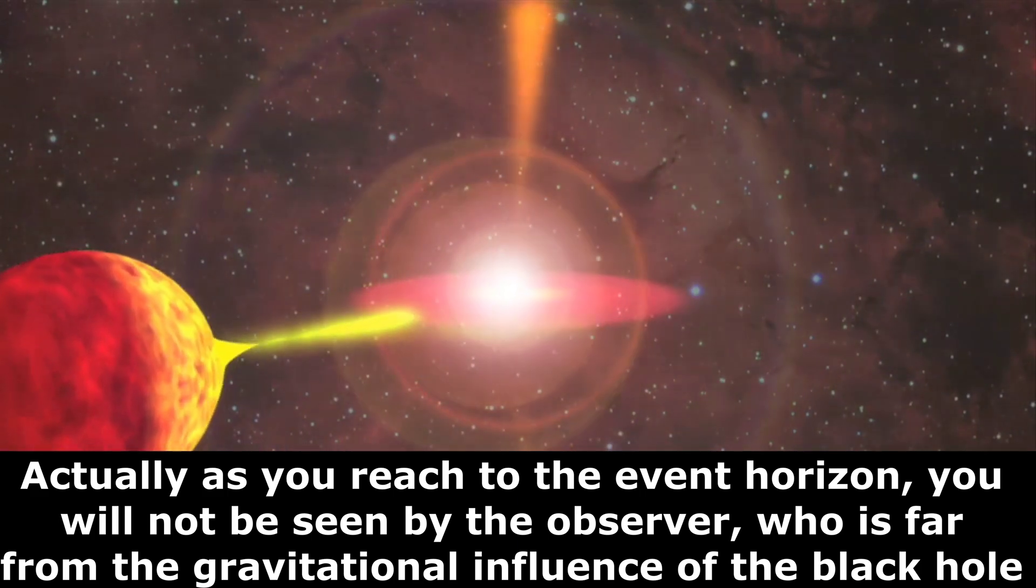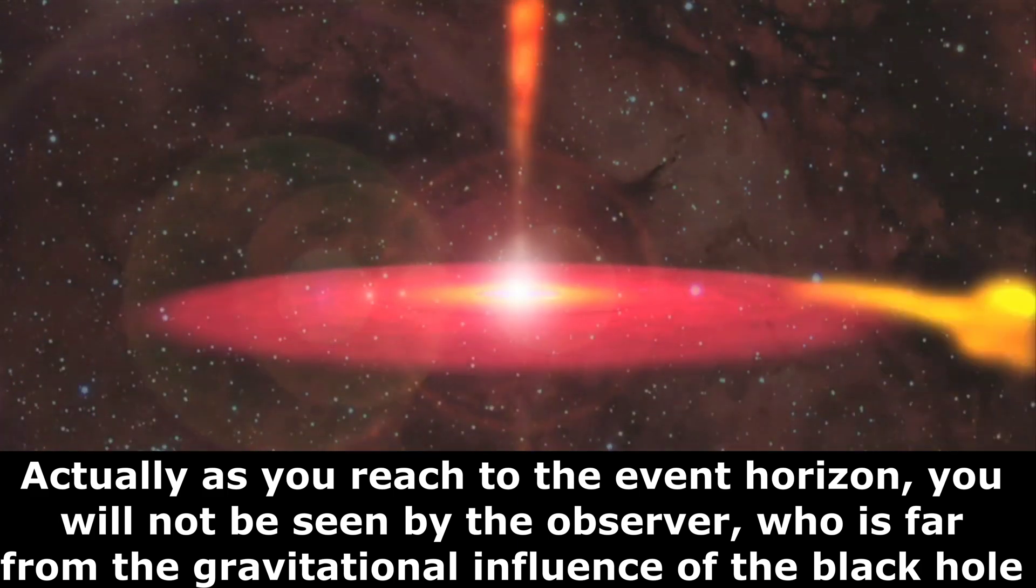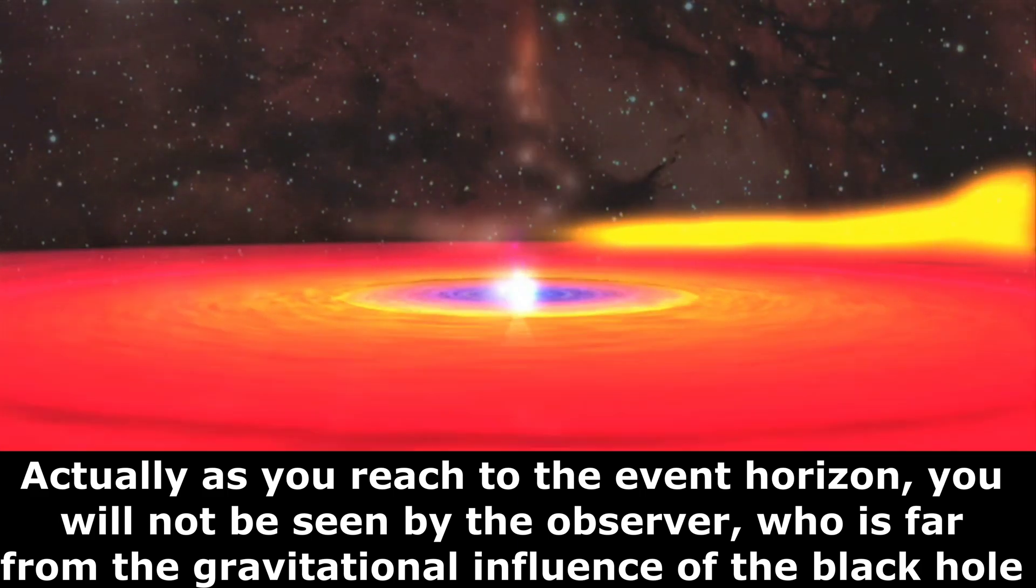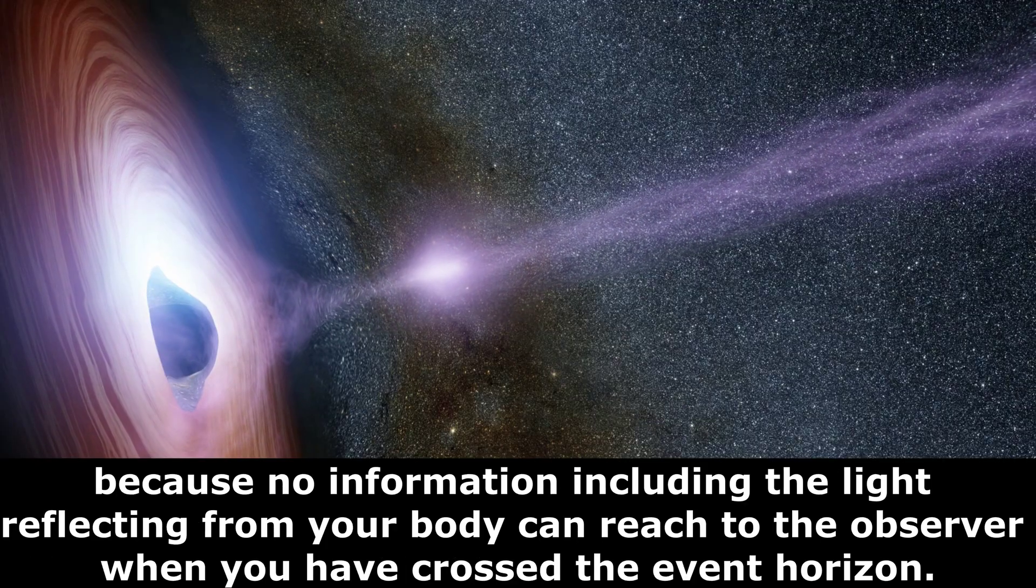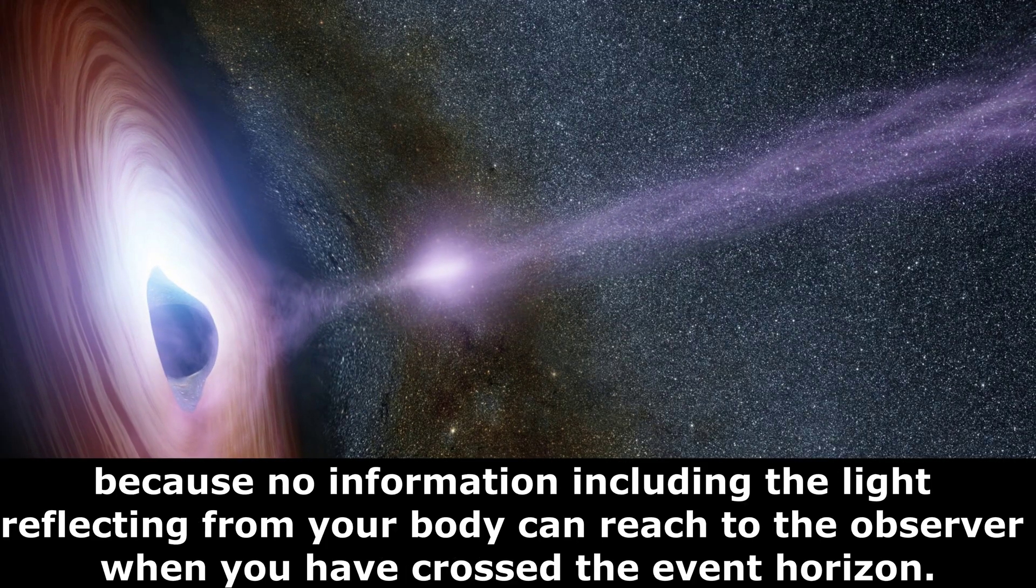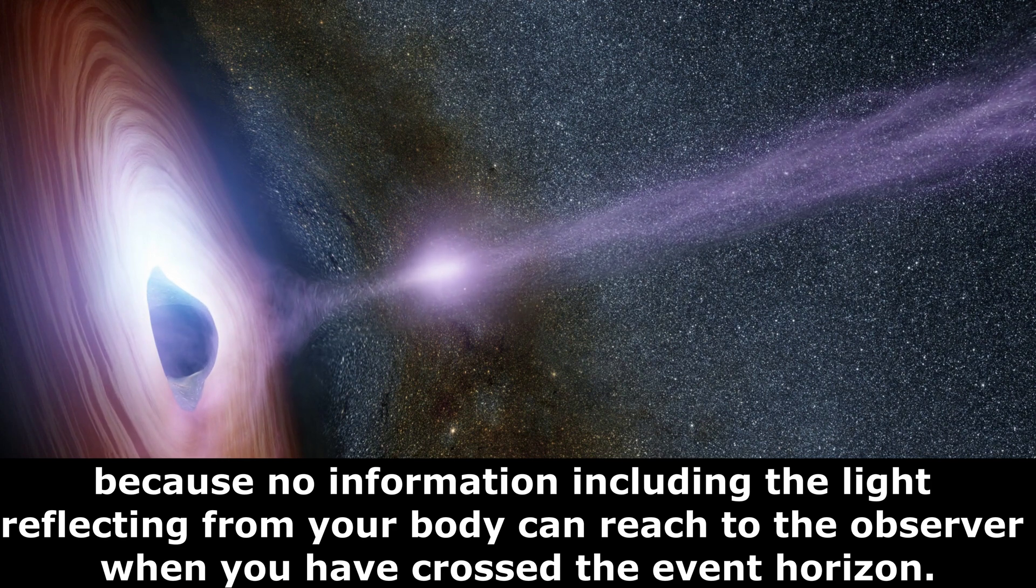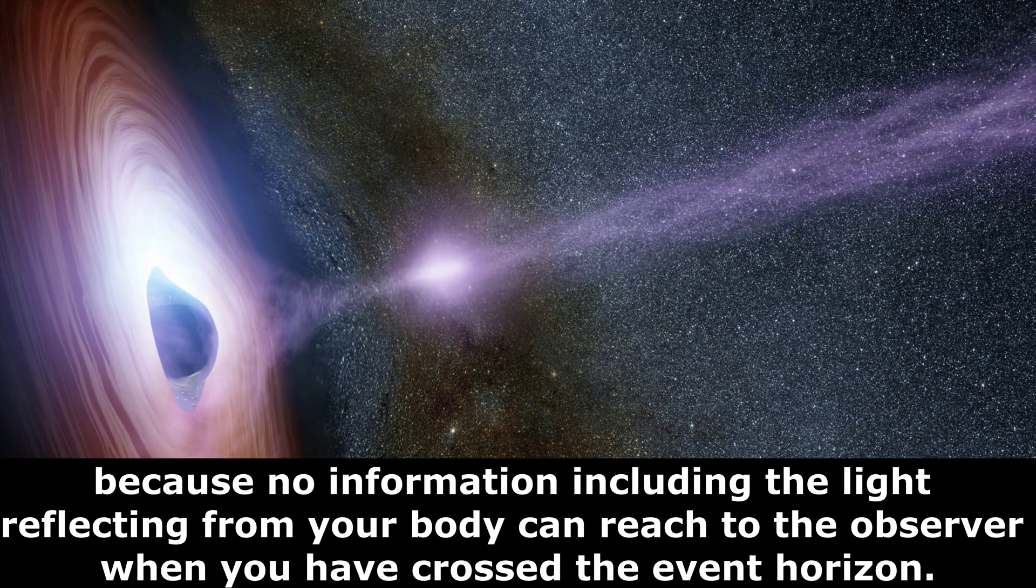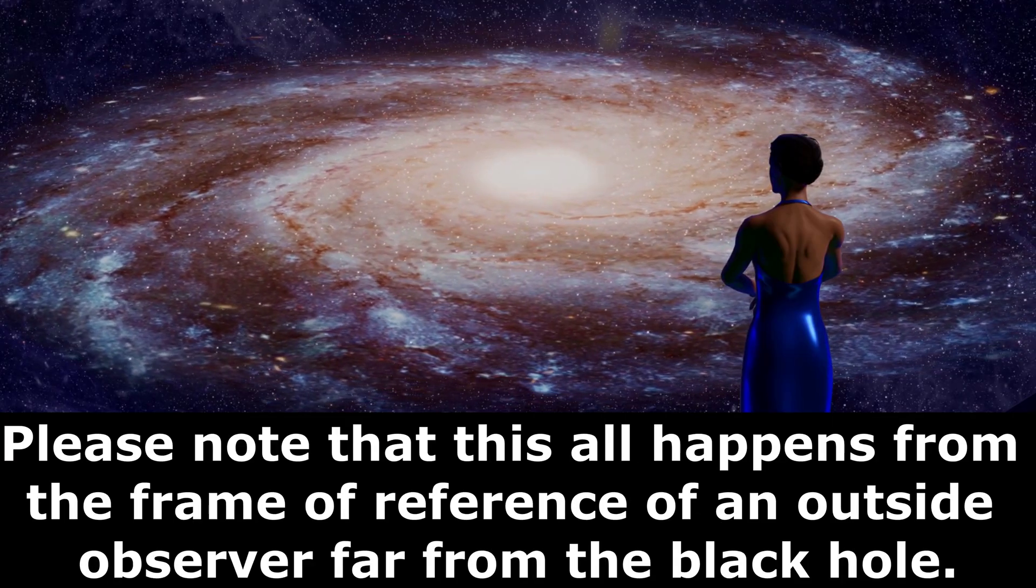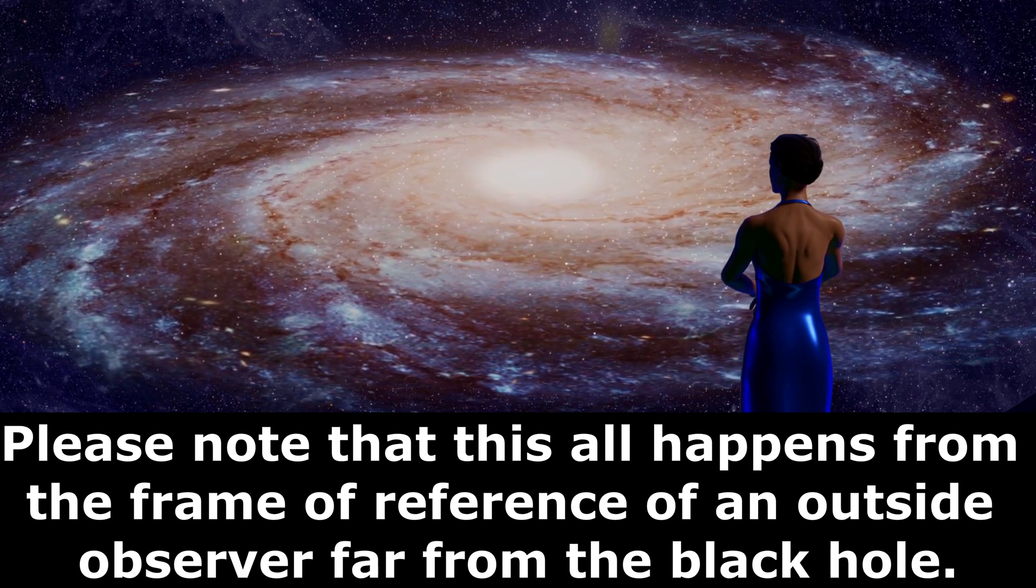Actually, as you reach the event horizon, you will not be seen by the observer who is far from the gravitational influence of the black hole, because no information including the light reflecting from your body can reach the observer when you have crossed the event horizon. Please note that this all happens from the frame of reference of an outside observer far from the black hole.